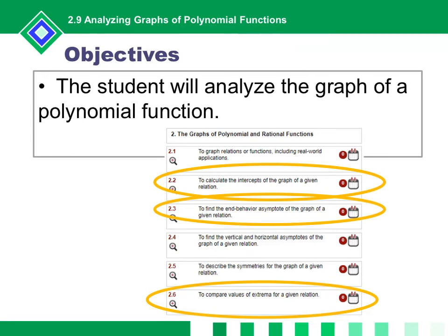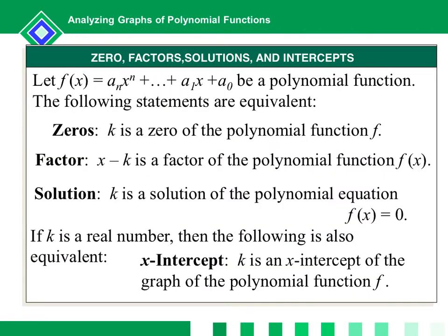In this lesson the objective is to analyze the graph of a polynomial function. We are going to look at certain concepts involved in polynomials and their graphs. If I have a polynomial function, the following statements are equivalent: k is a zero of the polynomial function f, I can write the factor x minus k, k is a solution when you set the polynomial equal to zero, and the x-intercept is k.